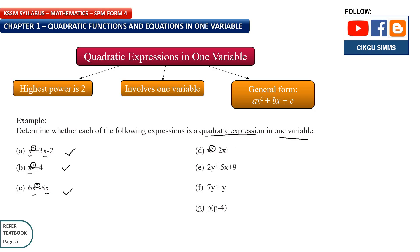This one: highest is 2 and only one variable — also okay. This one: highest is 3, so no. This one: highest is 2 but you have 2 variables — also no. This one: highest is 4, no. This one: highest is 2, yes. For the last one, you need to multiply inside the bracket — p multiplied by p gives p squared, then positive times negative gives negative 4p. So p squared minus 4p: highest is 2, only one variable p — this is a quadratic expression in one variable.